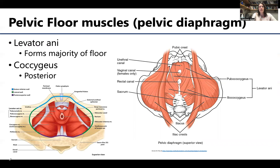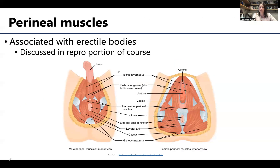One of the major muscles associated with the pelvis is what's referred to as the pelvic diaphragm, or sometimes referred to as pelvic floor muscles. Basically, this is what is creating the bottom portion of the pelvic cavity. Inferior or more superficial to the pelvic cavity will be perineal muscles. We are not going to talk about perineal muscles in this portion of the course — that will be covered in the repro portion — but these perineal muscles are closely associated with many of the erectile bodies associated with the penis or the clitoris. There will also be some sphincteric muscles.